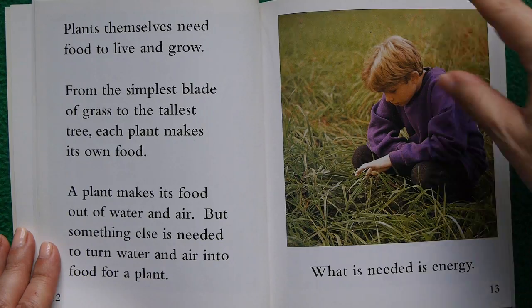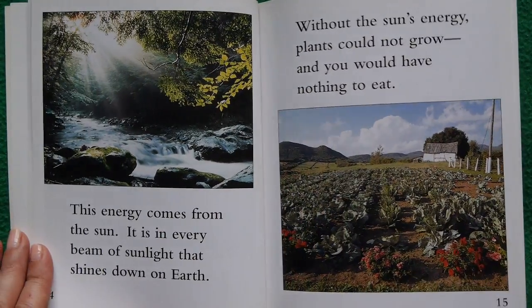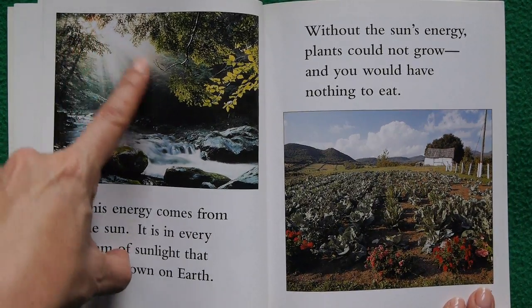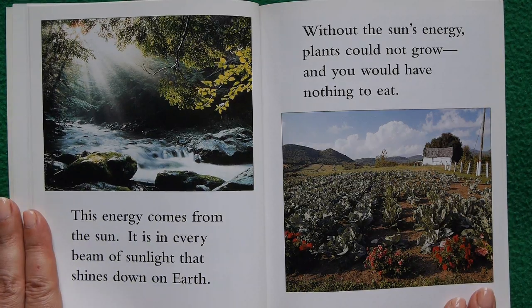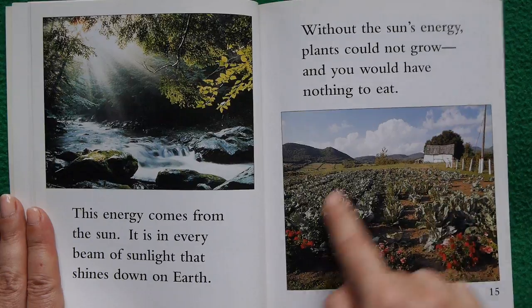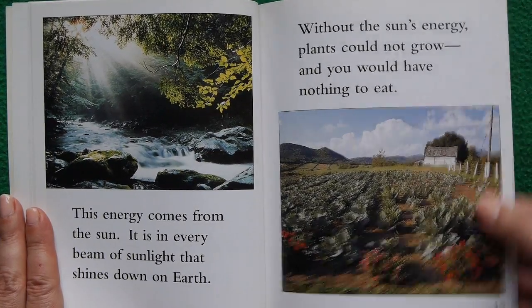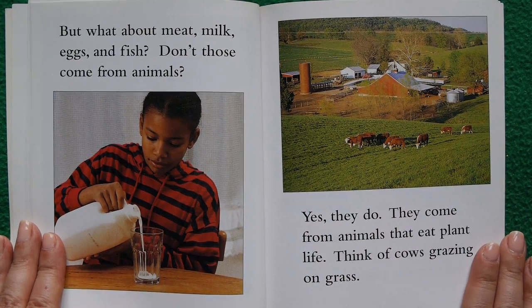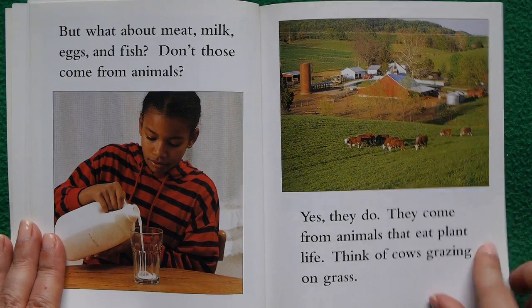What is needed is energy. This energy comes from the sun — it is in every beam of sunlight that shines down on Earth. Without the sun's energy, plants could not grow, and you would have nothing to eat.